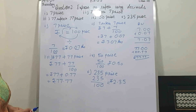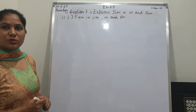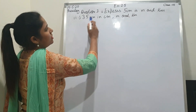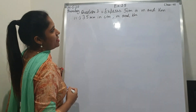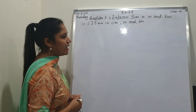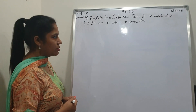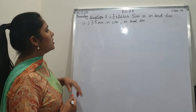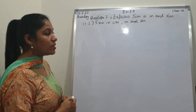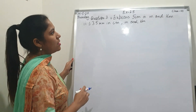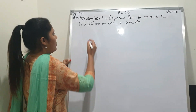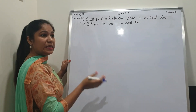Third question, students. Question number 3: express 5 centimeter in meter and kilometer. Second part is in centimeter, meter and kilometer. We have to convert them. Students, you know that formula that I have told you in your earlier class. That is: King Henry Died, Mother Didn't Cry Much.